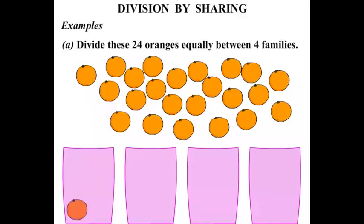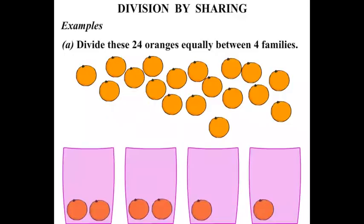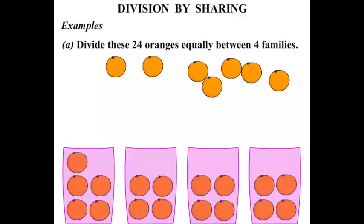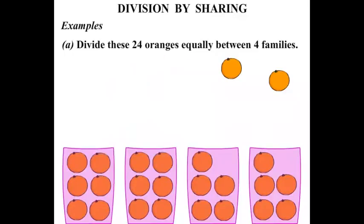1, 2, 3, 4, 5, 6, 7, 8, 9, 10, 11, 12, 13, 14, 15, 16, 17, 18, 19, 20, 21, 22, 23, 24. So the 24 oranges have been split up.